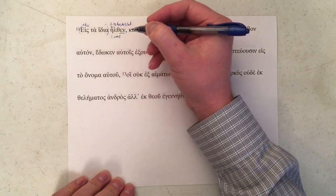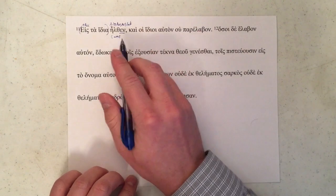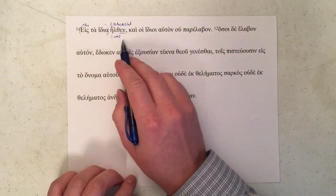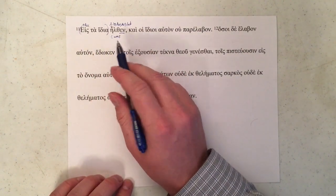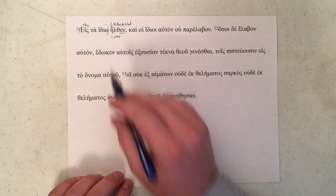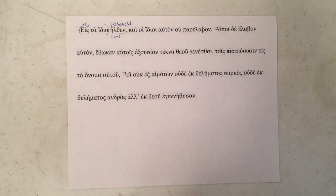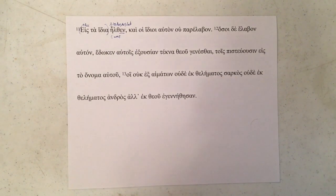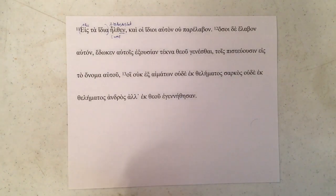We don't have anywhere present in here a subject, so we would assume a subject from our previous clause, or one of our previous clauses. And 'he' is really the only option.